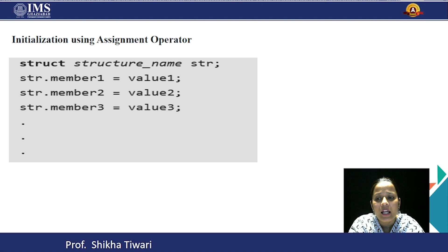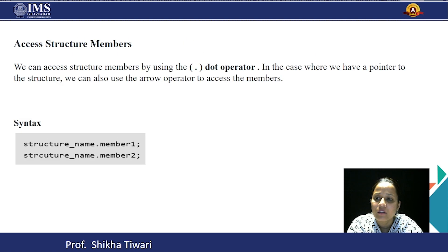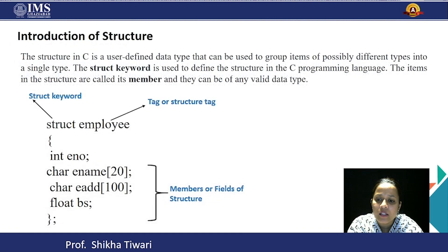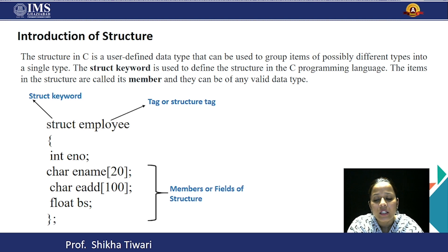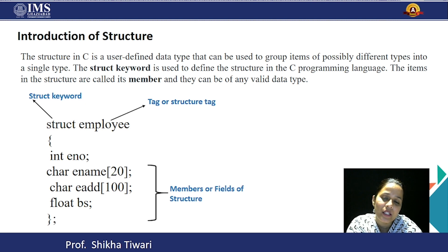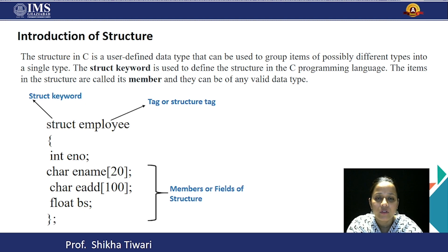You can initialize in a single line — for example str.member1 = value1. If you have all the employee details such as employee number equals 10, employee name, address, and basic salary, you can assign various values and initialize them. Initializing on a single line is better as it reduces lines of code and complexity in the program. Thank you for today and we will come up with another lecture.